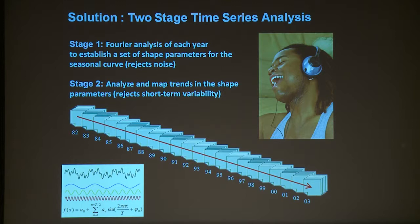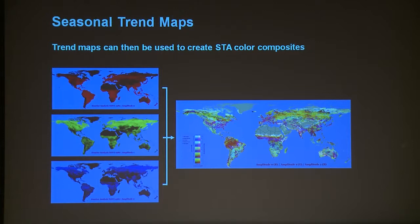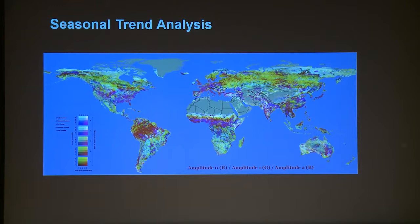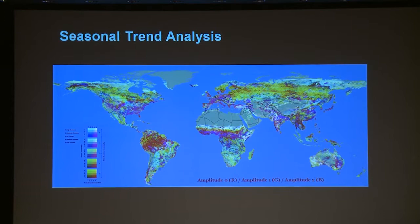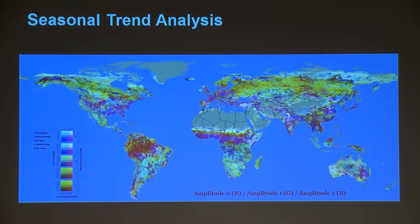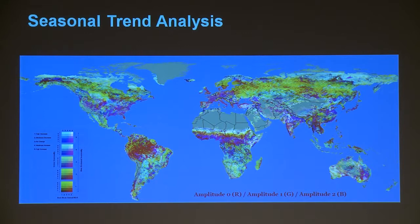In the second stage, we end up with five parameters that describe the shape of this curve. We then look at long-term trends in those five parameters. As it turns out, three parameters in particular are of special importance, which is fortunate because we can color those three trend maps in red, green, and blue, producing a color composite. This color composite portrays trends in seasonality. The critical color is gray — if you see gray, it means there's no trend. One thing you'll notice is that very few areas of the Earth are gray; they're mostly in the desert areas. So all these areas in color are actually changing the character of their seasonality — that's pretty dramatic.